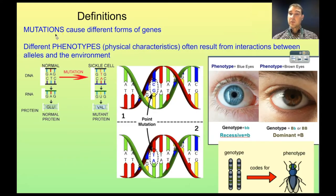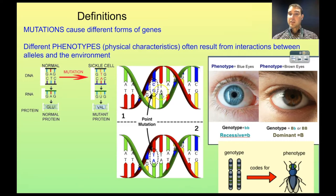Mutations cause different forms of genes. They are changes in the DNA sequence that lead to different forms of genes. For example, a point mutation is a one-letter change. DNA is made out of a four-letter code, and that sequence tells your cells what kind of proteins to produce. If you change the code, you might change the protein — it might work better or worse. With sickle cell anemia, the sequence GAG mutates so the A changes to a T, giving GTG. That changes one amino acid in the main protein, and that one change can stop the protein from working properly.